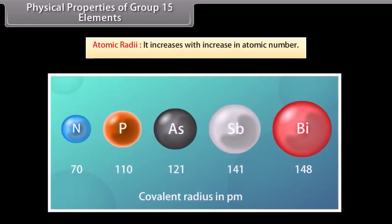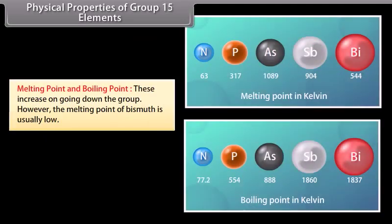Atomic radii increase with increase in atomic number. Melting point and boiling point increase on going down the group. However, the melting point of bismuth is unusually low. This may be due to its greater tendency to form 3 rather than 5 covalent bonds, resulting in weak forces of attraction between atoms in the solid state.